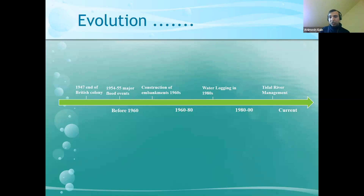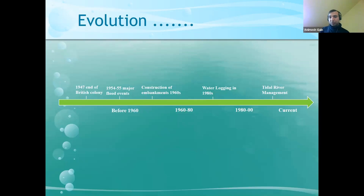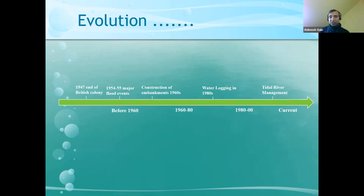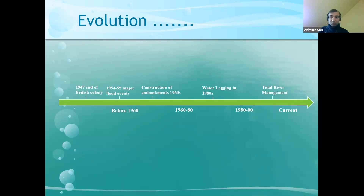The embankments protected against flooding from the river and initially helped agricultural production significantly. But slowly, after a few years, rivers carry huge amounts of sediment that normally would be deposited in the floodplain, aiding land formation. Due to the embankments, this process no longer took place. Sedimentation happened in the river bed instead, increasing the river bed level and reducing navigability. Internal waterlogging started.